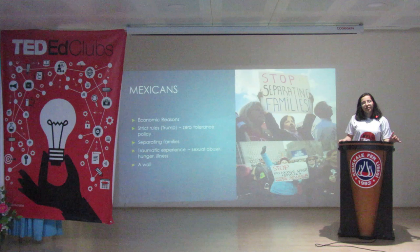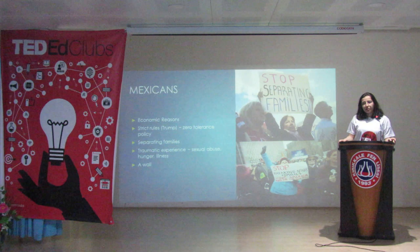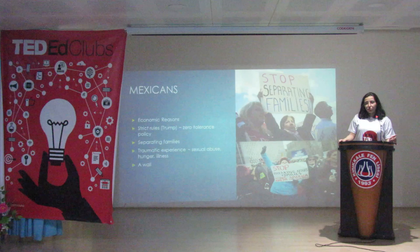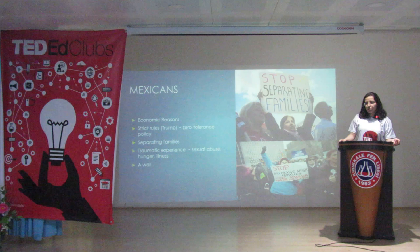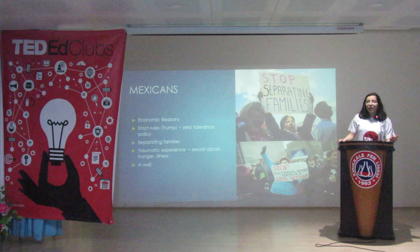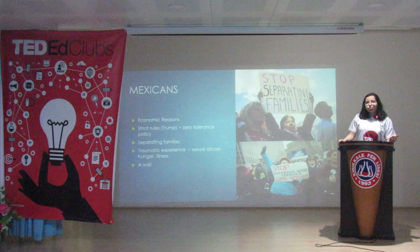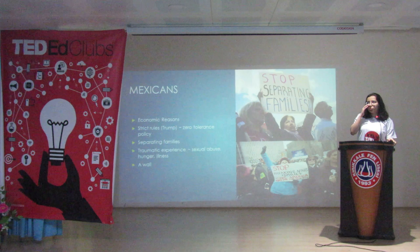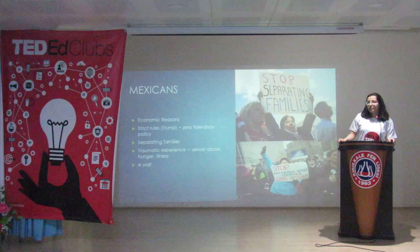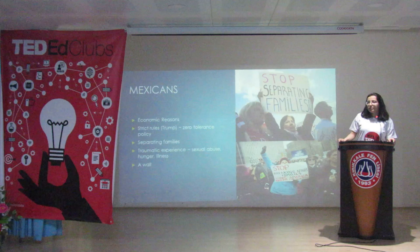Being an immigrant is hard too. The reason behind Mexican immigration is economic. But recently, Trump set strict rules for immigrants — adults who came into the country without permission were taken to prison, and children were taken to cages. According to some reports, these children were exposed to abuse and had to face illness and hunger. They also wanted to build a wall, and Trump's strict policy is called the Zero Tolerance Policy, which was a traumatic experience for children.